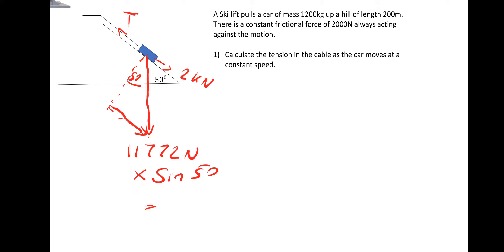The component that's parallel to the ramp is the 11,772 multiplied by sine 50. If you put that in your calculator, you will get 9,018 Newtons. We then need to add the 2000 Newtons from the frictional force to give us 11,018 Newtons. That's the force acting down the ramp. Because the ski lift car is travelling at a constant speed, the tension will be equal and opposite. So that, consequently, is the tension in the cable.